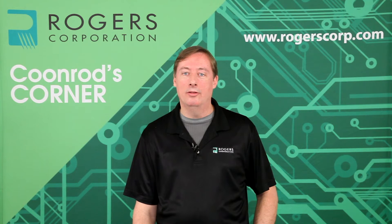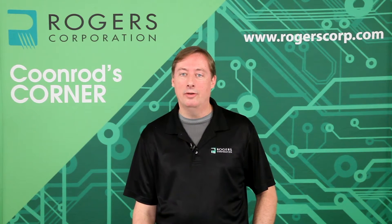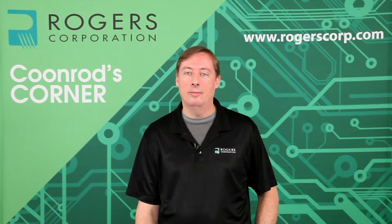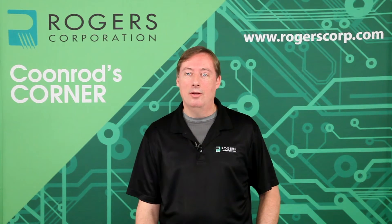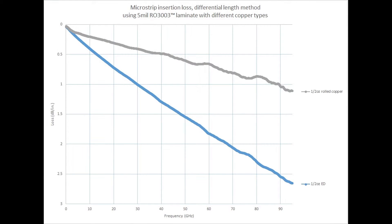Now let's look at some measured data. The first is using the 5 mil RO3003 laminate, looking at microstrip transmission line testing from about 10 megahertz to 110 gigahertz. The chart shows a comparison of two different materials — both microstrip transmission lines on 5 mil RO3003, but using different copper. The blue curve uses standard ED copper, and the gray curve uses rolled copper. Rolled copper has a much smoother surface, resulting in much less conductor loss and therefore less insertion loss. Overall, the rolled copper has significantly lower insertion loss than the standard ED copper.